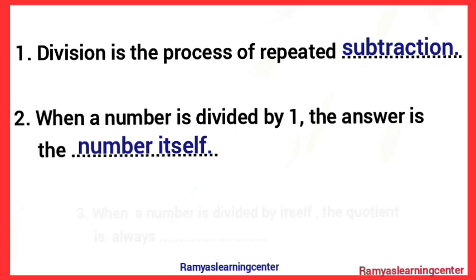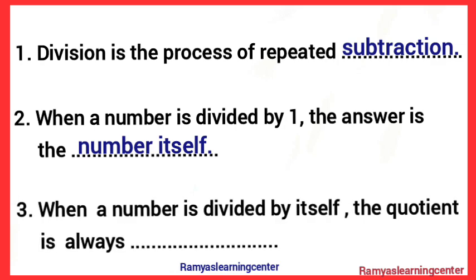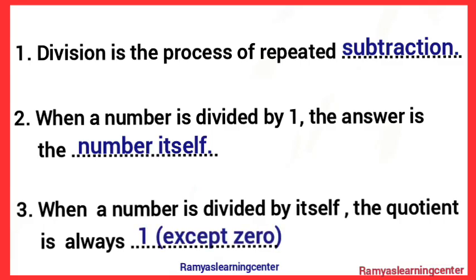Next one — When a number is divided by itself, the quotient is always dash. Answer: The quotient is always 1, except 0.